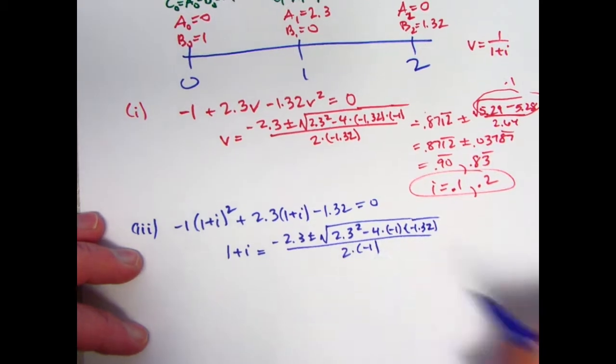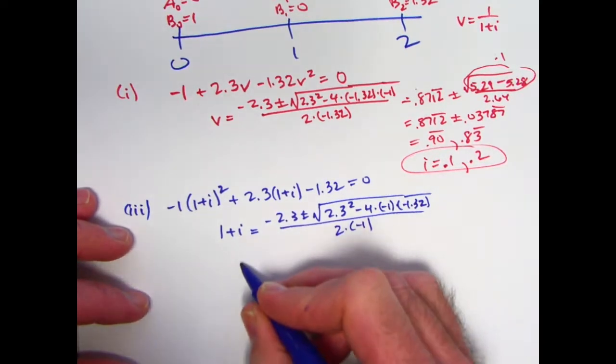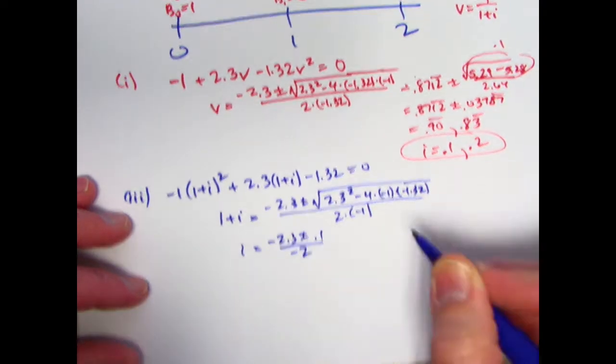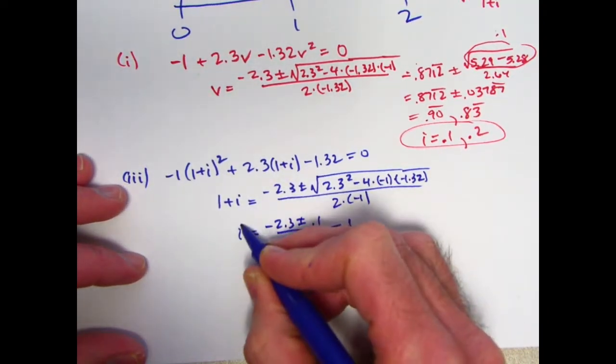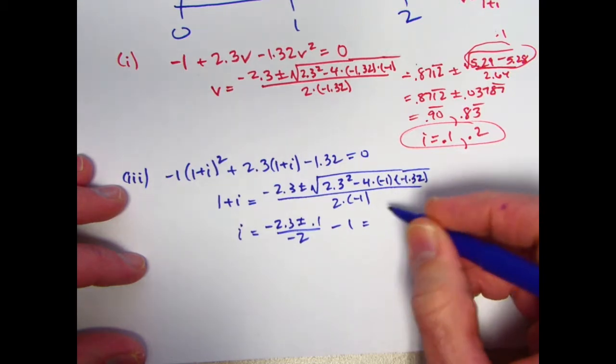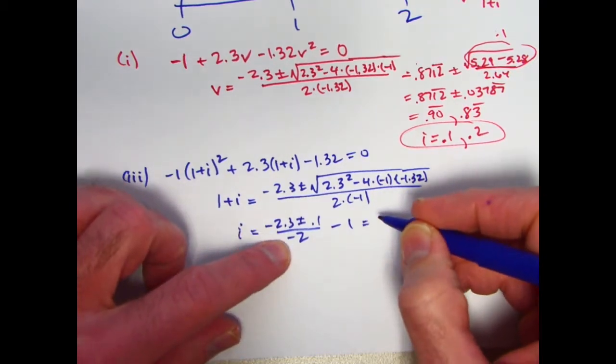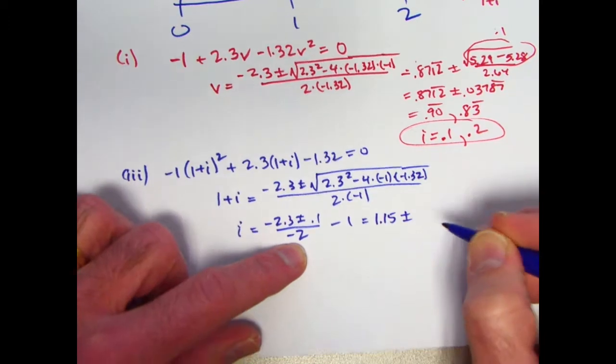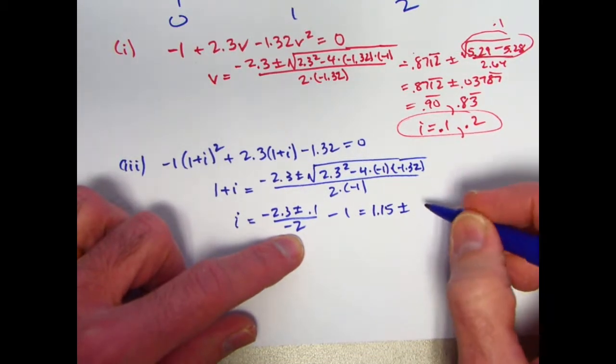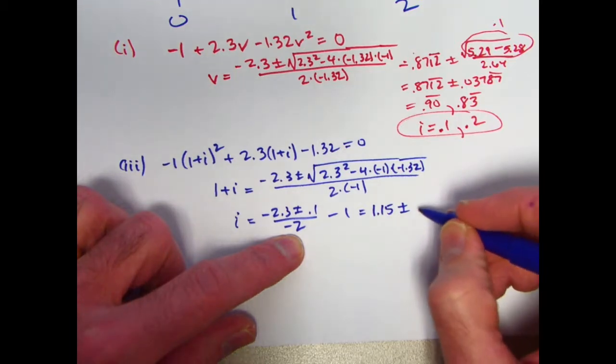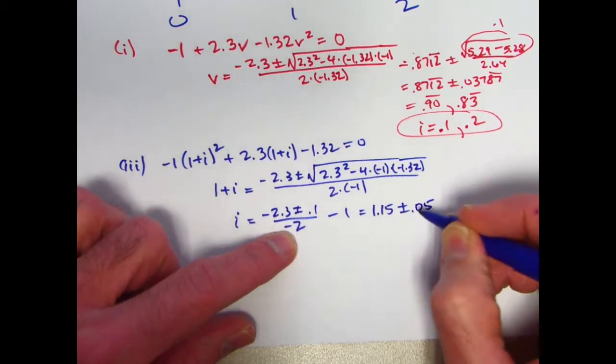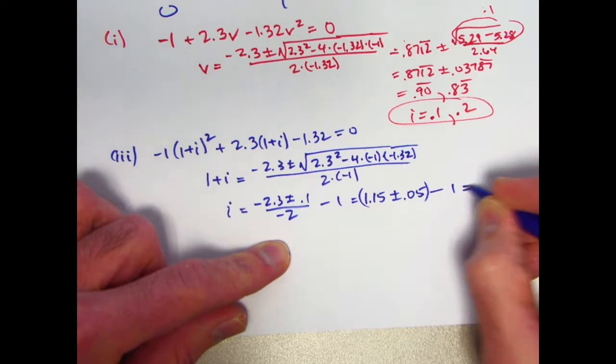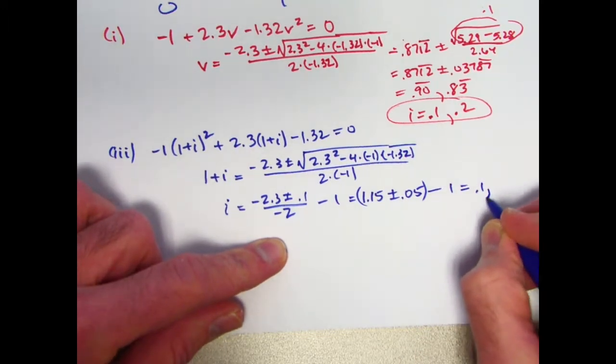So 1 plus I is going to be negative 2.3 plus or minus the square root of 2.3 squared minus 4 times, once again, negative 1 times negative 1.32. The thing under the square root is going to be the same as before. And this thing is the same as before. What's different is down on the bottom. It's not 2 times negative 1.32. It's 2 times negative 1. Looks like I, then, is going to be negative 2.3 plus or minus 0.1 over negative 2. Then minus 1. That'll be negative 2.3 divided by negative 2. That will be 1.15 plus or minus 0.1 divided by negative 2 would be negative 0.05.